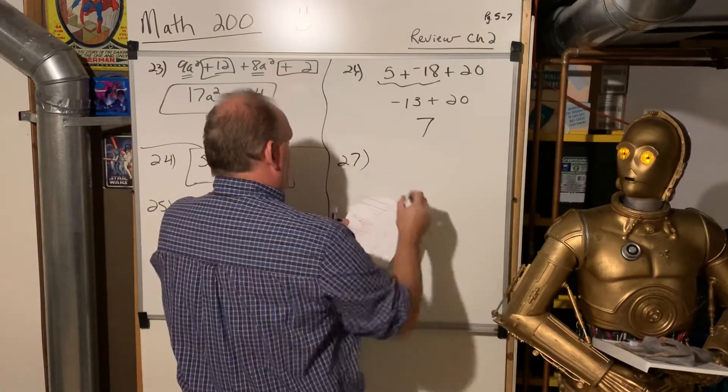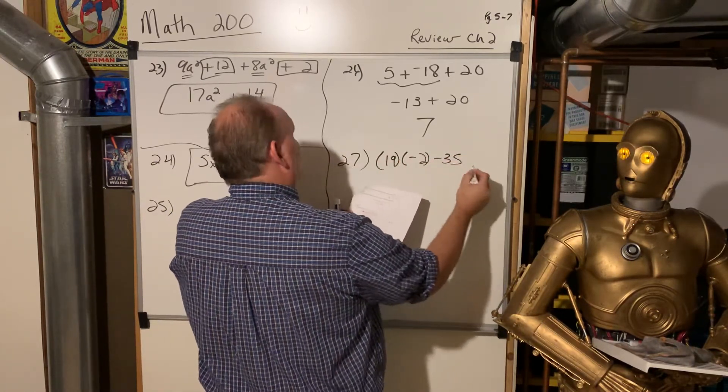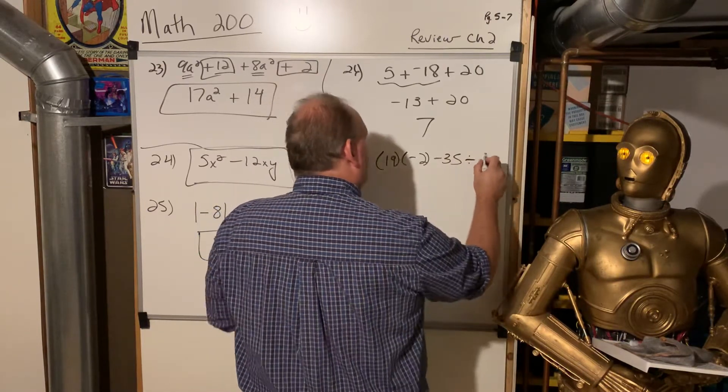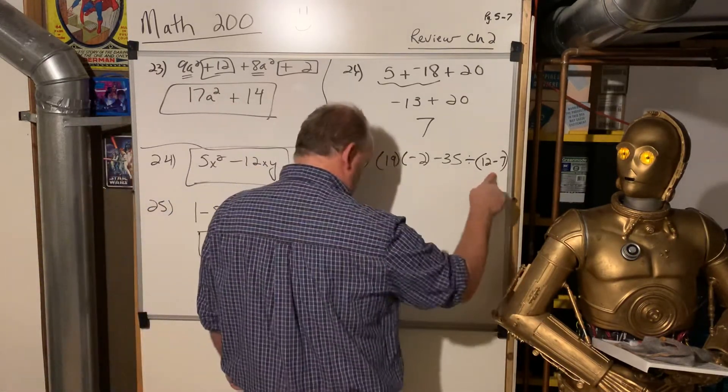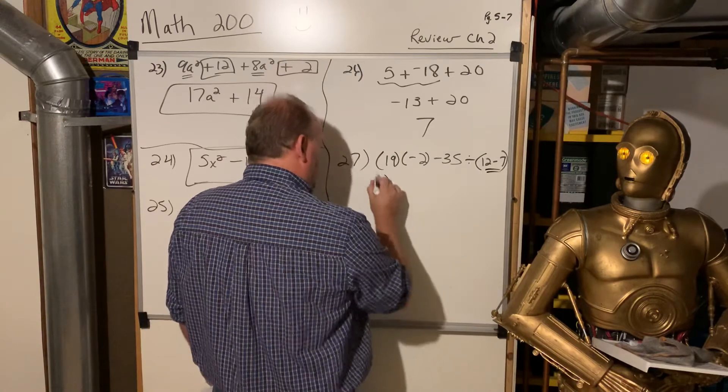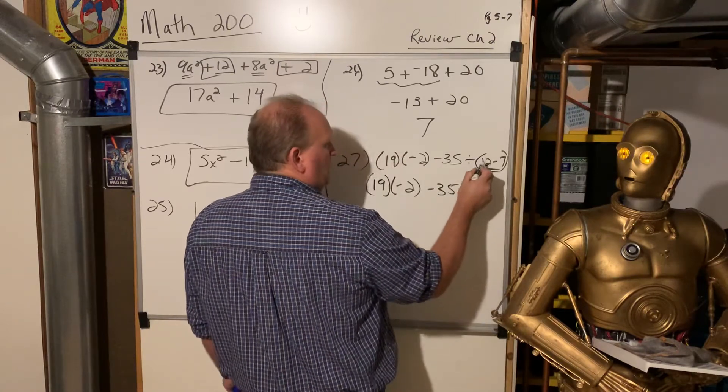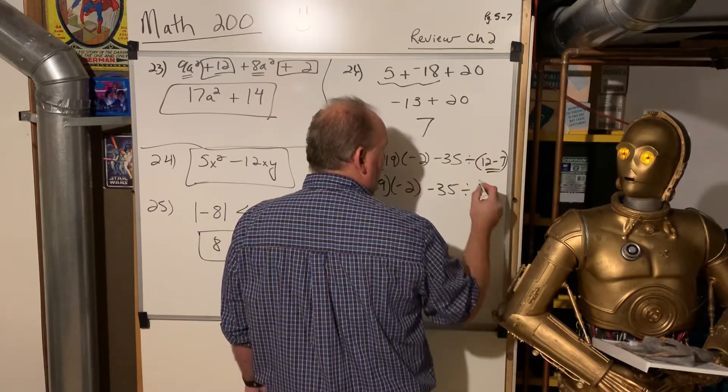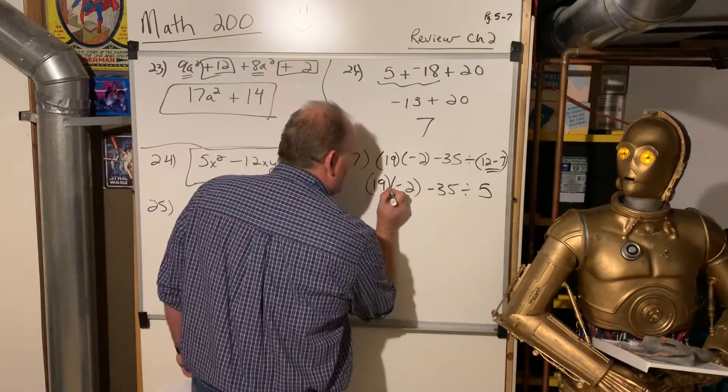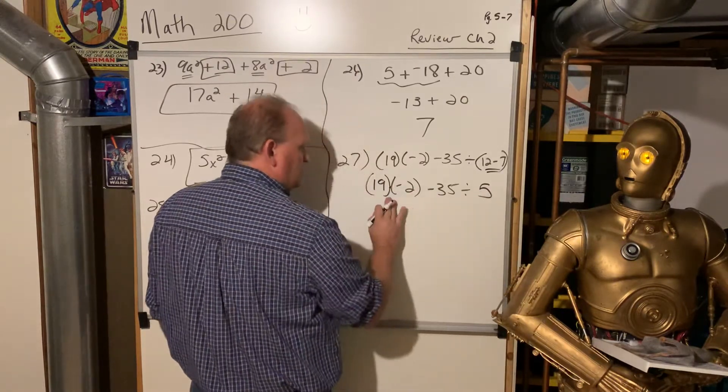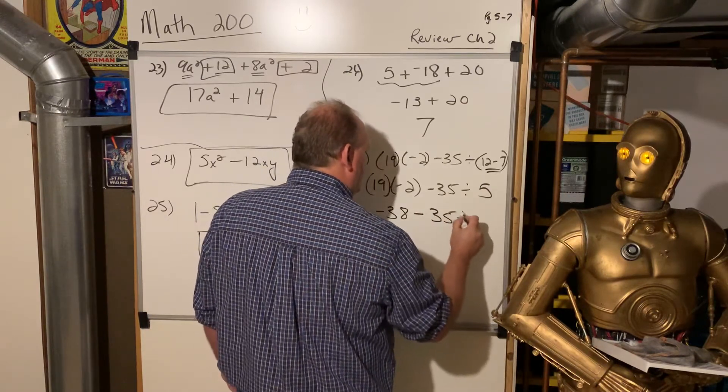All right, 27. We got 19 times negative 2 minus 35 divided by 12 minus 7. All right, so again, please excuse my dear Aunt Sally. We're going to do parentheses first. So we're going to leave this alone. We're going to leave that alone. We're going to leave that alone. 12 minus 7 is 5. All right, so now it's like a brand new problem. We got multiply here. We got divide there. We'll just go left to right. So we'll do this multiplication first. That's negative 38 minus 35 divided by 5.